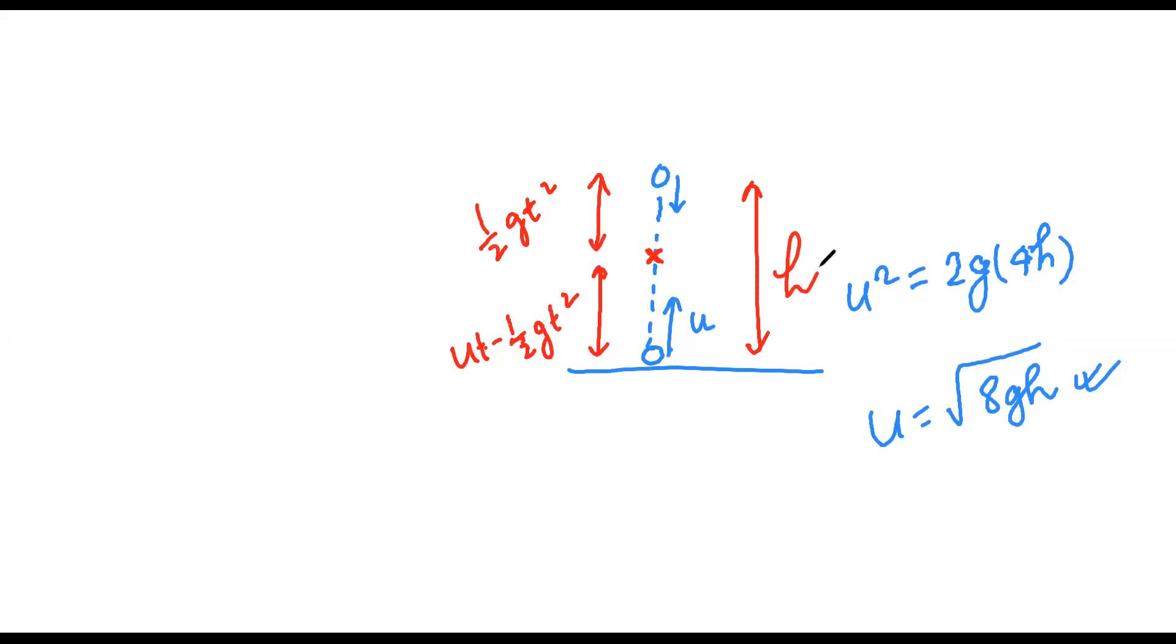h is equal to u into t. u into t because if you add it, it will be cut. It will be cut. h by u, h by root 8gh, how much? Root h by 8gh.